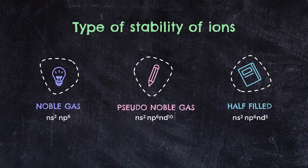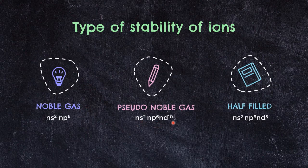Since formation of a bond requires ions to be formed, there are three types of ion stability you need to know. This stability is based on their valence electronic configurations. If the ion has valence electronic configuration of nS² nP⁶, they are called noble gas configurations. For nS² nP⁶ nD¹⁰, they are called pseudo noble gas configurations. And lastly, if you have nS² nP⁶ nD⁵, the type of stability is half-filled configurations.